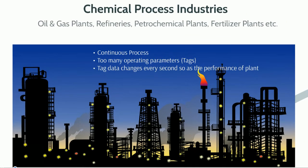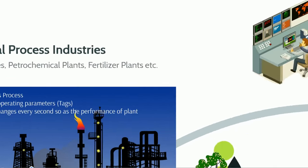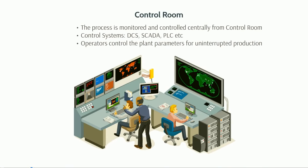In most of the chemical process industries, the manufacturing process is continuous. There will be many operating parameters that change continuously every fraction of a second. These operating parameters are often called tags. Plant operators monitor and control the process conditions through process control systems like DCS, SCADA, PLC, etc.